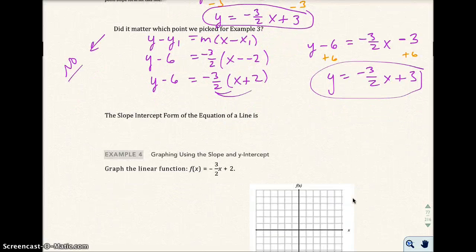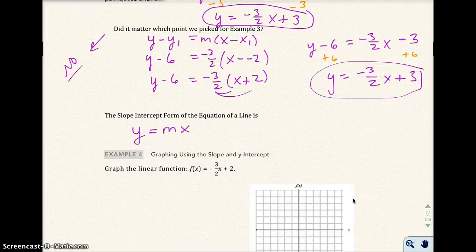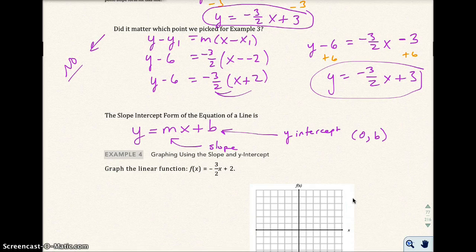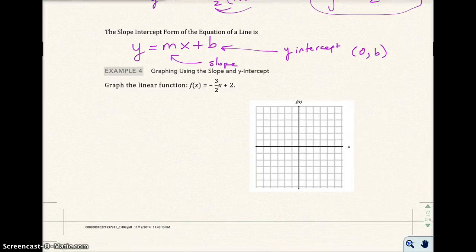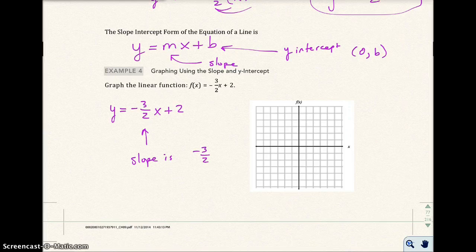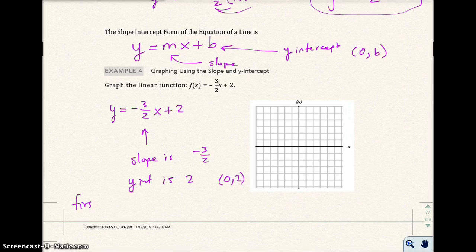The slope-intercept form of an equation of a line is y equals mx plus b. m represents your slope. And b represents your y-intercept, which is the point (0, b). Remember, all y-intercepts have 0 for the x-value. If I want to graph the linear function f(x) equals -3 halves x plus 2. Remember, that's the same thing as y equals -3 over 2 x plus 2.